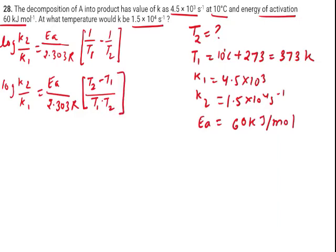So I am going to put the given values in this formula. The value of K2 is 1.5 multiply by 10 to the power 4 divided by the value of K1 is 4.5 into 10 to the power 3.